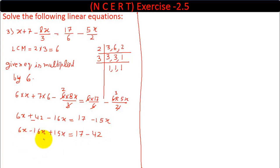Now solving these: 6 minus 16 is minus 10, plus 15 is plus 5x equals minus 42 minus 17 gives minus 25. So 5x equals minus 25. Divide both sides by 5.